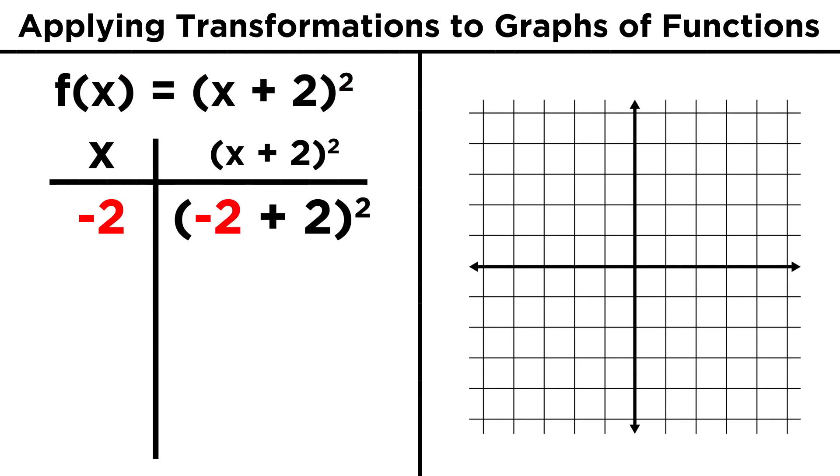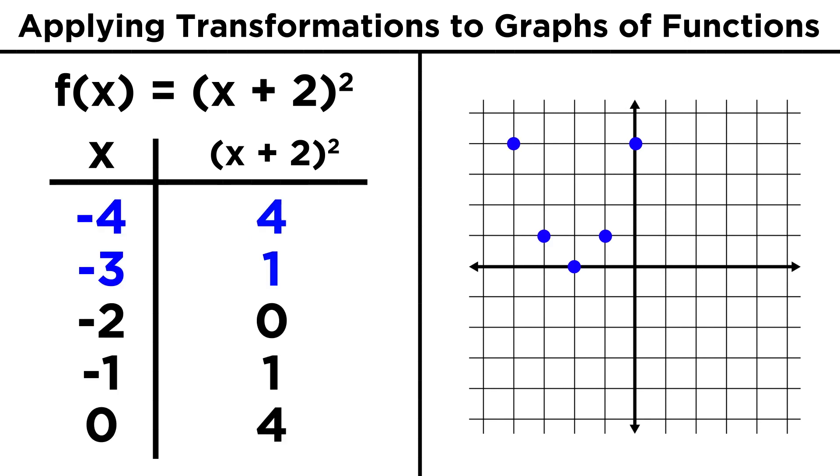As we can see, when we plug in negative two, we have to first add two, so it's like we are plugging in zero. Going up from there, we get some more values. Let's do a few more to the left as well, and this is what we get.